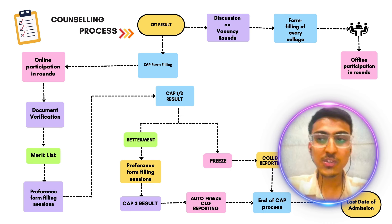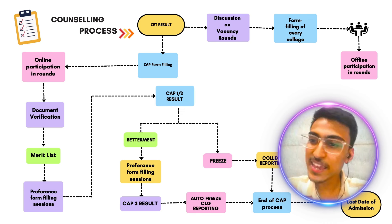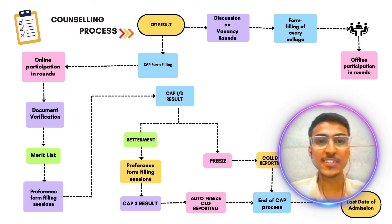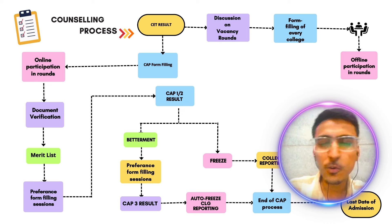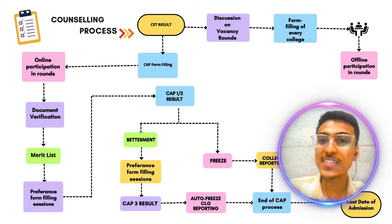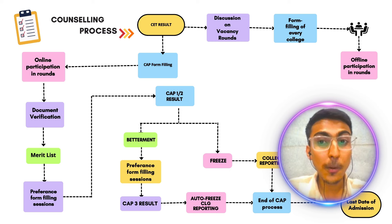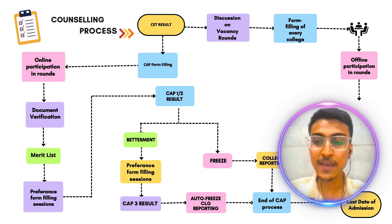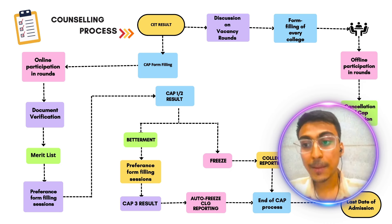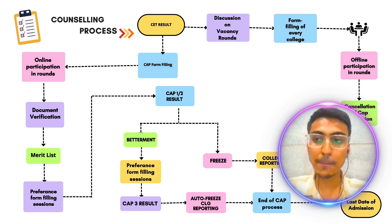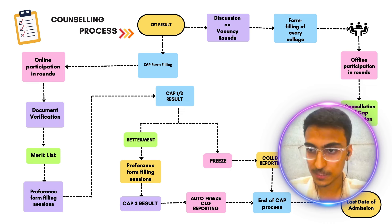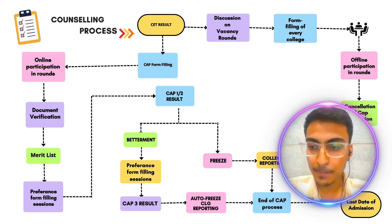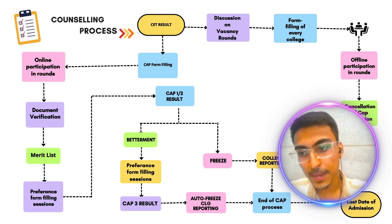जो student वहाँ पे present रहेगा, उस student को यह seats offer होती हैं। और यही round में आपके cut-off बहुत गिर जाते हैं। यह vacancy round पूरा offline चलता है — जो college में present रहेगा with their fees, जिसके पास fees है और college में physically present है, उनको वो seats देंगे। बची हुई seats को college को कोई-न-कोई student को देनी ही पड़ेगी। Vacancy round की cut-off, CAP round की cut-off से 1-2 percentile गिर जाती है — top 10 colleges में भी। तो vacancy round तो हर एक student को भरना ही चाहिए। Vacancy round के बाद आपका cancellation होता है — आपने जो college CAP round से लिया, उसको cancel करवाना पड़ता है — और vacancy round में जो college मिला, वहाँ जाके seats accept करनी पड़ती हैं।